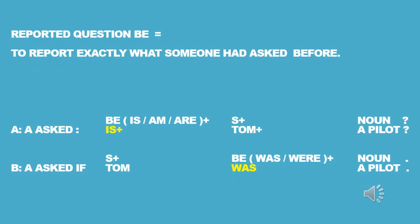Reported questions, unit 10. To report exactly what someone had asked before, we just report somebody's questions. A asks: 'Is Tom a pilot?' 'Is' comes from verb to be, Tom is the subject, a pilot is a noun. Now we report what A has asked: 'A asks if Tom was a pilot.' So there's a change — we add 'if'.